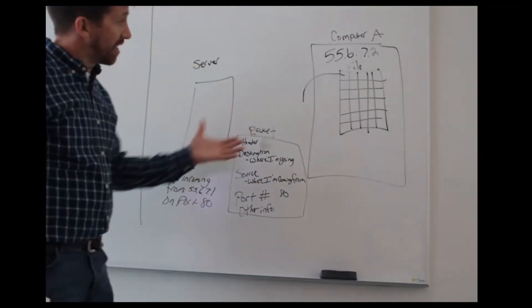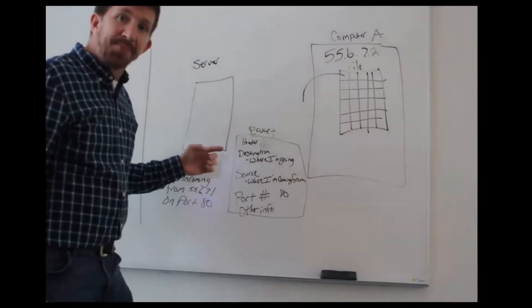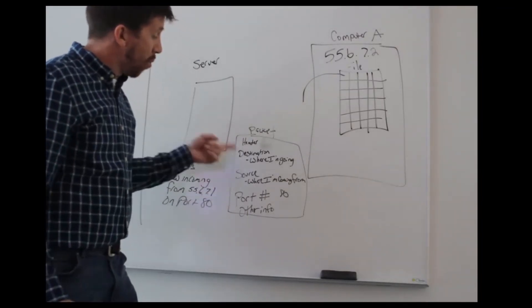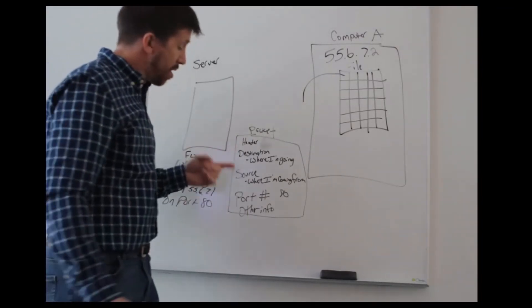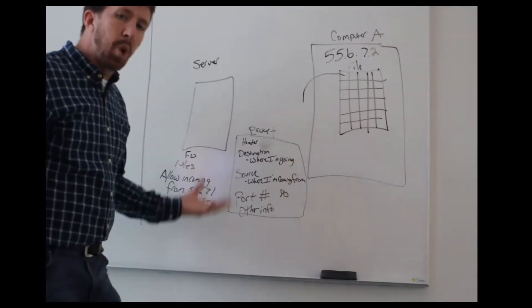So that's what a firewall does. It inspects the packet. The packet has information about where it's going, where it's coming from, what protocol and what port it is using.